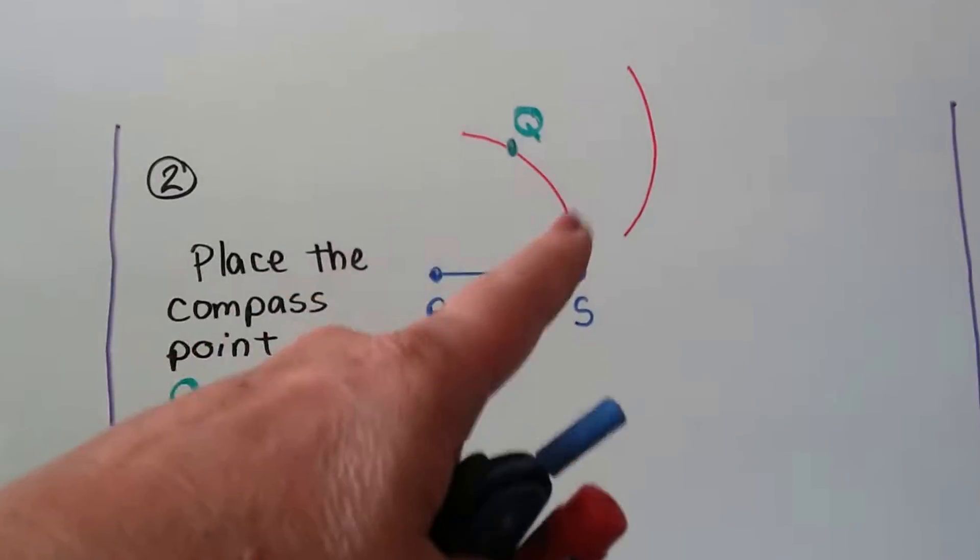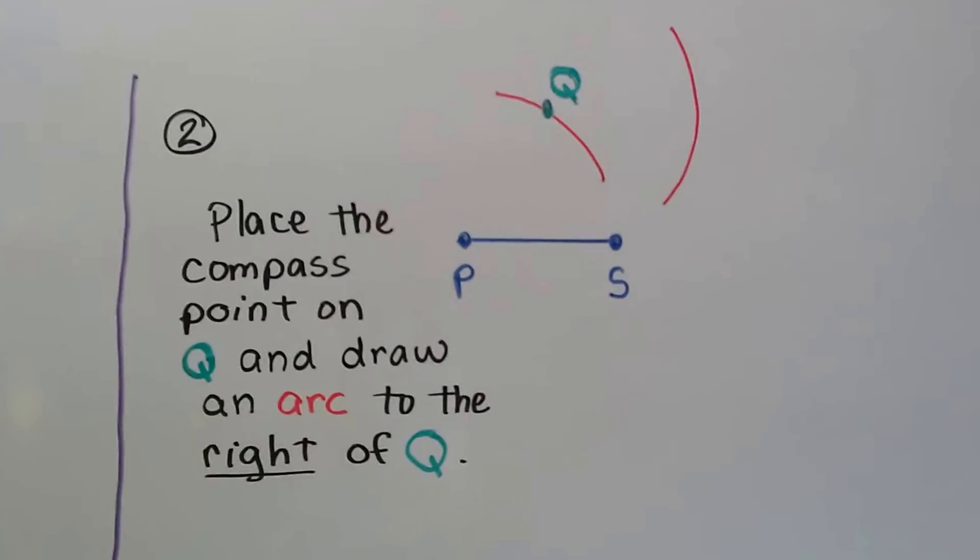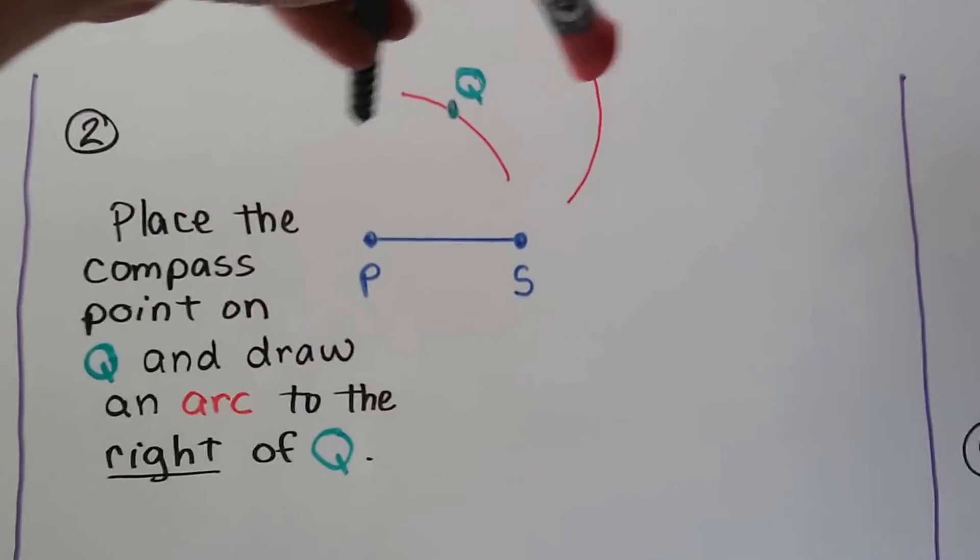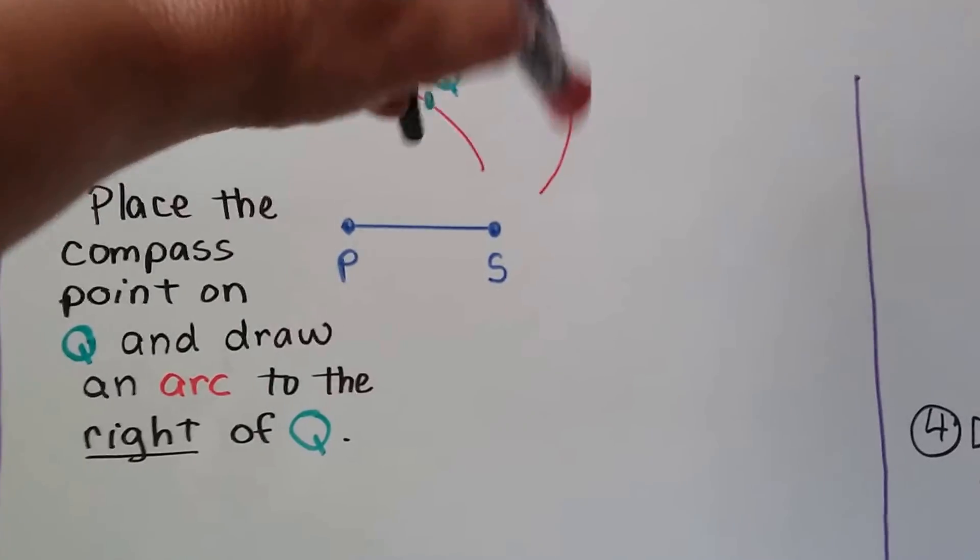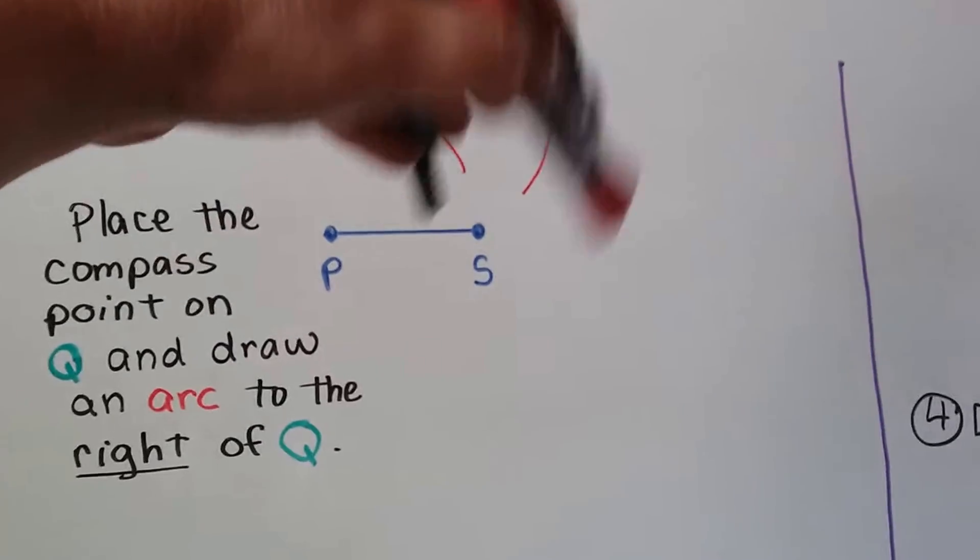Once we've made that arc and labeled that point Q, we put our compass on point Q. And we make another arc to the right of Q.